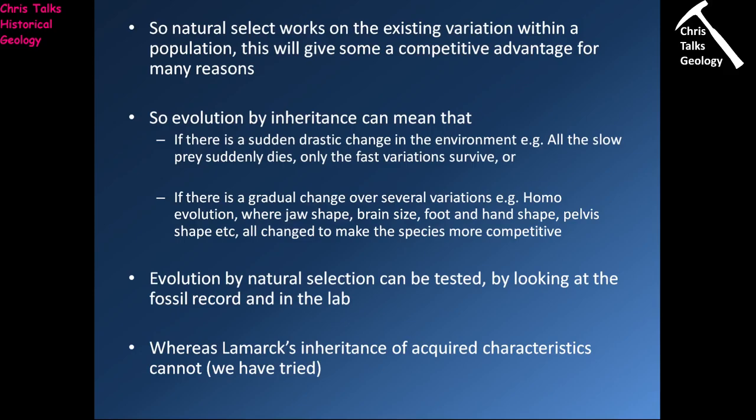Natural selection works on the existing variation within a population, giving some individuals a competitive advantage over others. Evolution by inheritance means that if there is a sudden drastic change in the environment — for instance, a disease sweeps through the prey species and all the slow prey dies — you have to adapt to those new conditions. There are also gradual changes which occur over several generations, such as the evolution of the genus Homo, where we've seen jaw shape change, brain size change, changes in foot and hand shape, and our pelvis shift as we went from walking on four limbs to two.